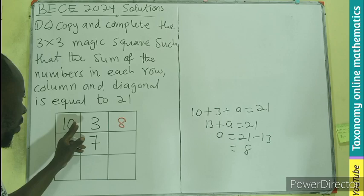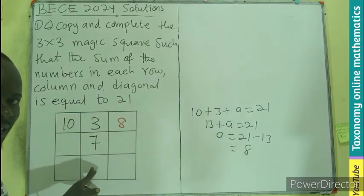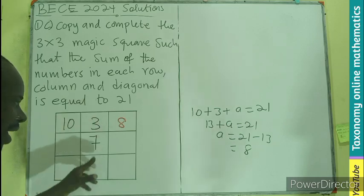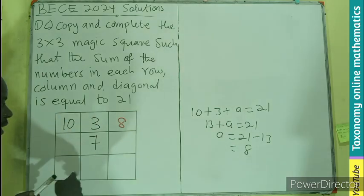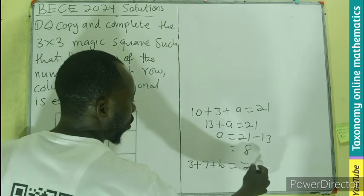So 1, 2, we can find here, that is the rule. So if I label here b, meaning 3 plus 7 plus b should also produce 21. So this will be 10 plus b equals 21.